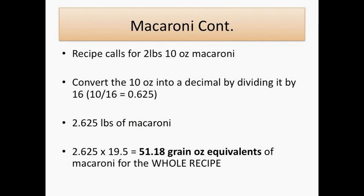We identify that the recipe calls for 2 pounds 10 ounces of macaroni. We must convert the 10 ounces into a decimal — we divide 10 ounces by 16, because there are 16 ounces in a pound, and get 0.625, which we add to the 2 pounds of macaroni. Next, we multiply the total pounds of macaroni by the number of servings per pound and find that the macaroni gives us a grain ounce equivalent of 51.18 for the whole recipe.